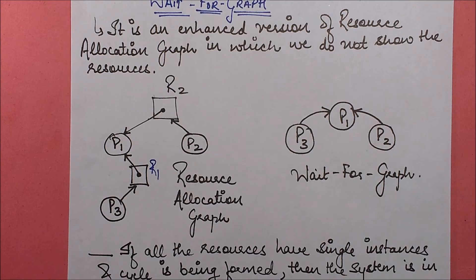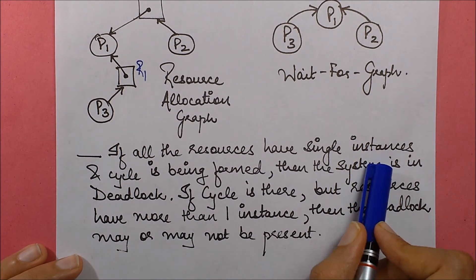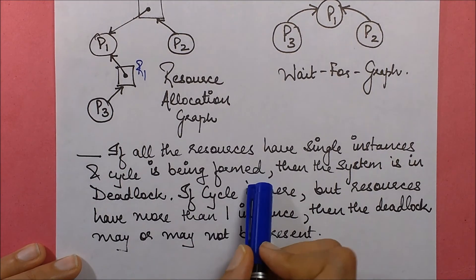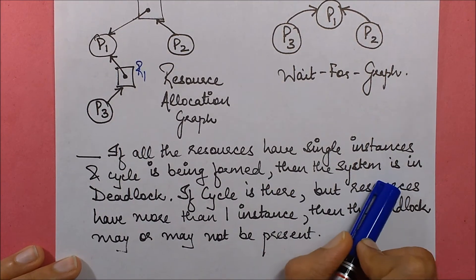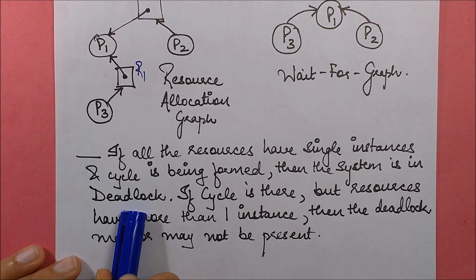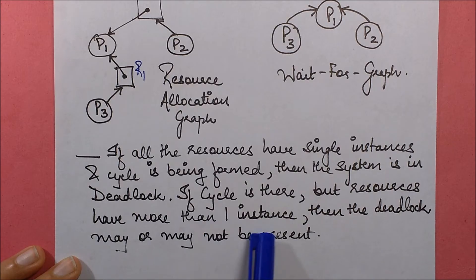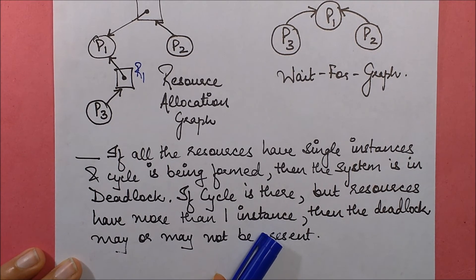Now, what does wait-for-graph say? If all the resources have single instances and a cycle is being formed, then the system is in deadlock, much similar to what we discussed in resource allocation graph. If a cycle is there but resources have more than one instance, then the deadlock may or may not be present.